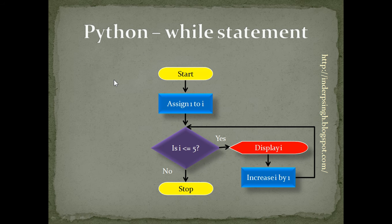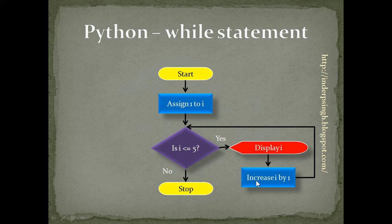Let us see an example which prints numbers from 1 to 5. The logic: first, make a variable i as 1. Check if i is less than or equal to 5. If yes, display i and increase i by 1, then go back and check again. It will continue while the condition i <= 5 remains true. If i is greater than 5, it will stop.